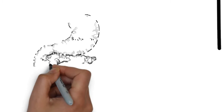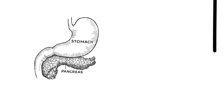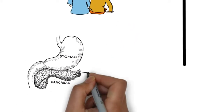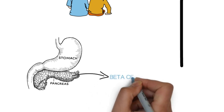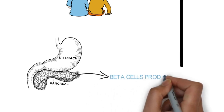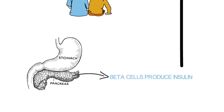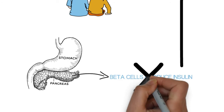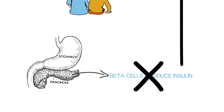The pancreas is an organ present close to the stomach which has different cells that release enzymes. These cells of the pancreas are destroyed by the body's own immune system. Type 1 diabetes is caused due to the destruction of the beta cells of the pancreas which produce insulin.